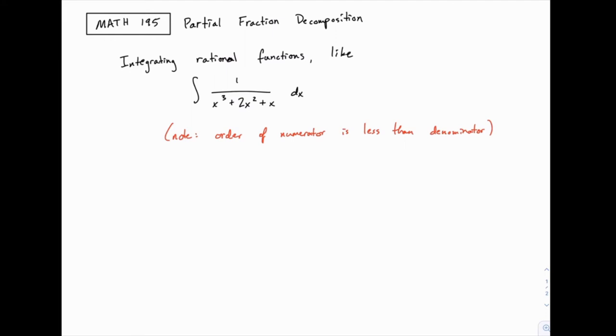Now how do we do this? It turns out that this complicated rational function can be written in terms of simpler ones. So it turns out that 1 over x cubed plus 2x squared plus x can be broken down or decomposed into what we would call partial fractions. In other words, it can be decomposed into simpler rational functions. It turns out that it's equal to 1 over x minus 1 over x plus 1 minus 1 over the quantity x plus 1 squared.